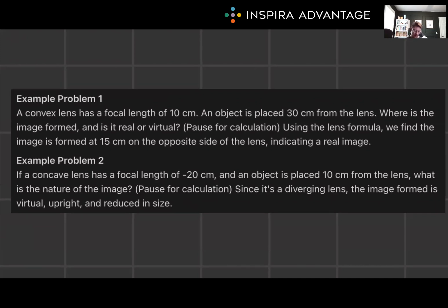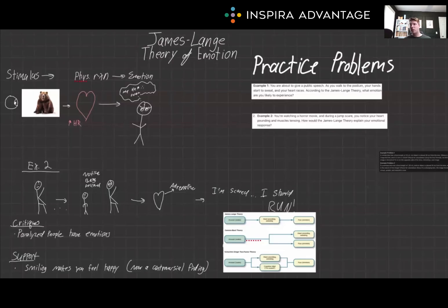Example problem two: you're watching a horror movie and during a jump scare, you notice your heart pounding and muscles tensing. How would the James-Lange theory explain your emotional response? Just like before, this theory would suggest that you interpret these physiological changes as fear caused by the jump scare. And hopefully by this point you're rolling your eyes saying, 'Brenton, that was super easy.' Good — I want this to be super easy so you don't miss these low-hanging fruit points on the test. We've belabored the James-Lange theory enough that you should never miss a question on it again.